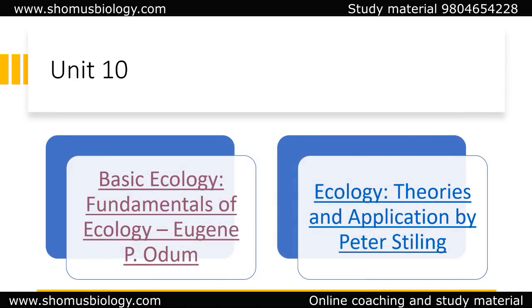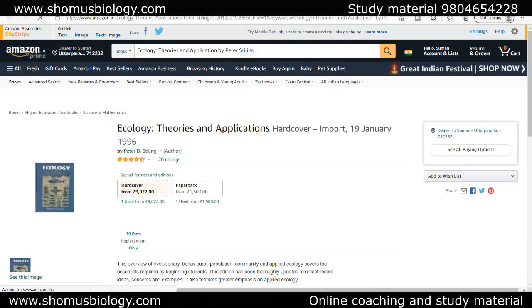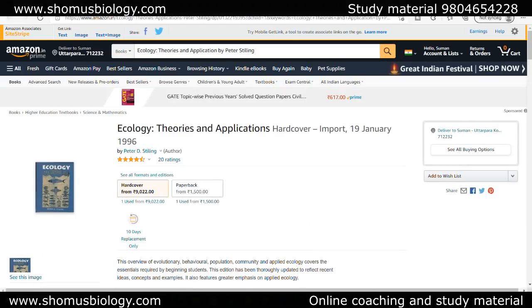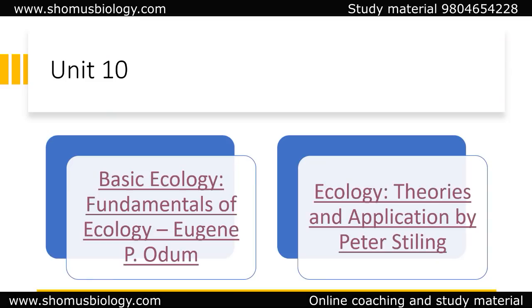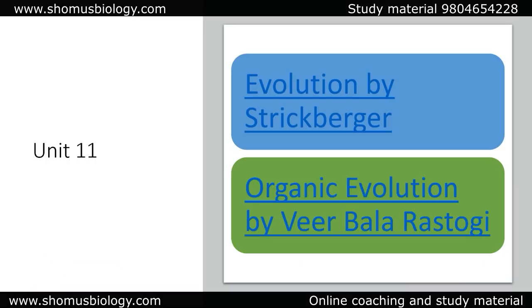Theories and Applications of Ecology by Peter Stilling is another book for Unit 10. Both books together are needed — some portions from basic ecology and some from the application book. Combining them will give you enough knowledge to even apply for earth science examinations. For Unit 11, Evolution by Strickberger is a single hands-down book — there is no doubt about its credibility.